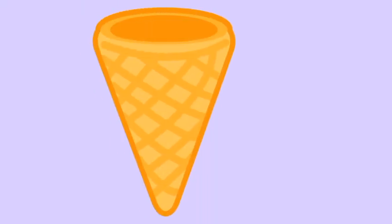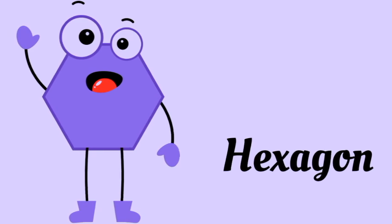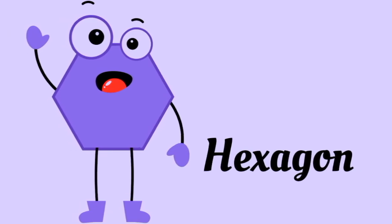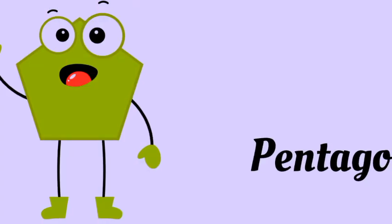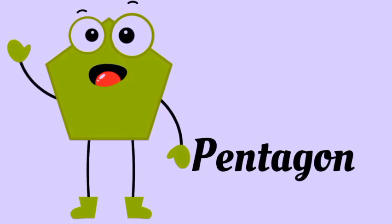Cone — cone has two sides and three angles. Hexagon — hexagon has six sides and six angles. Pentagon — pentagon has five sides and five angles.